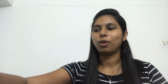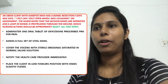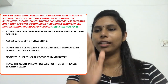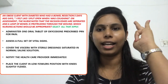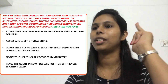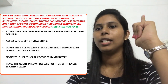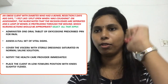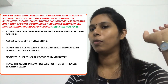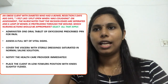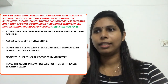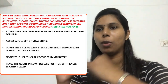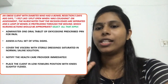Now let's go to the question options. Administering an oral tablet of Oxycodone PRN is not appropriate here — that is incorrect. Assess a full set of vital signs — that is a correct option. Cover the viscera with sterile dressing saturated in normal saline — that is also correct. Notify the healthcare provider immediately — correct. Place the client in low Fowler's position with knees slightly flexed — correct. So options 2, 3, 4, and 5 are the correct answers.